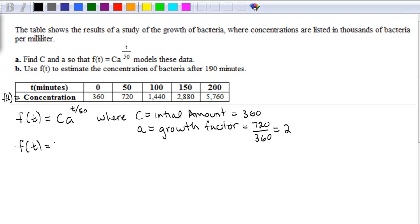So that would be C, which is 360, times 2 to the t over 50, because that would be the growth factor. The t and f(t) change. Those are variables, so we won't try to find those.